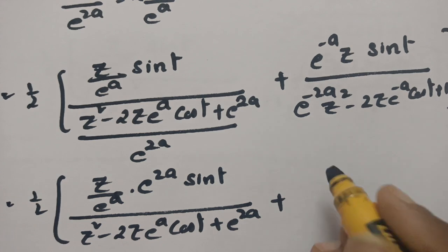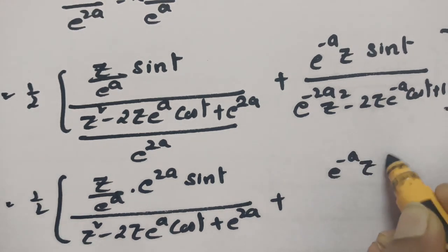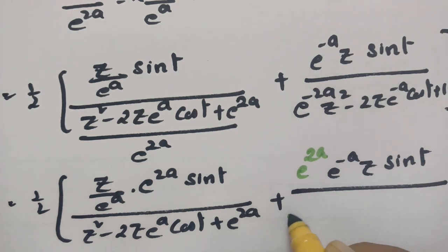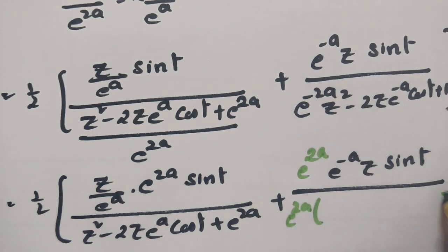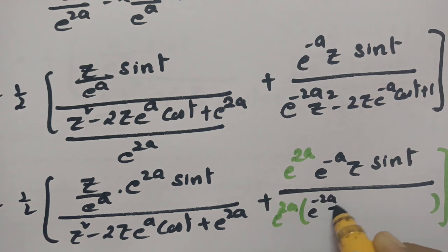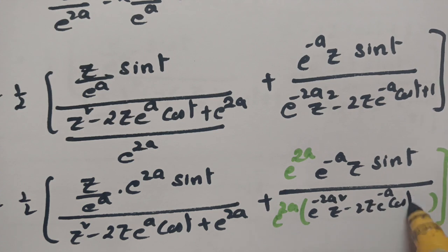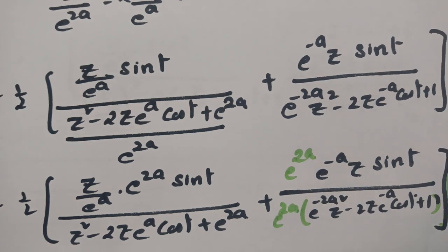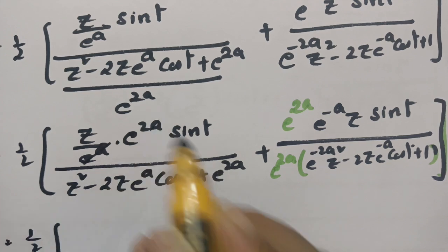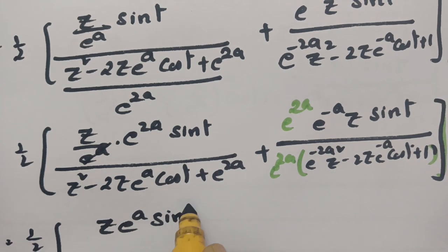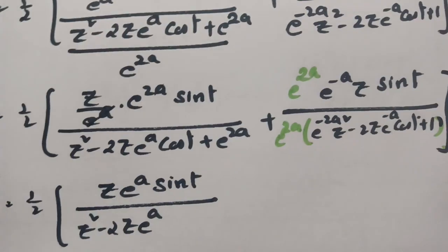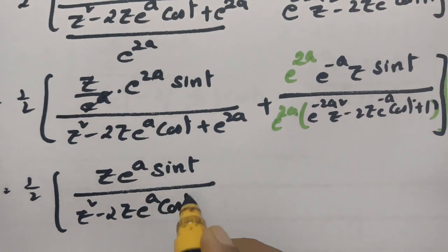Now if I multiply the numerator and denominator. If I multiply with e power 2a in the numerator as well as the denominator, then it will be e power minus 2a into z square minus 2z e power minus a into cos(t) plus 1. Now if I multiply and cancel, this will be half times of z into e power a into sin(t) divided by z square minus 2z into e power a into cos(t) plus e power 2a.